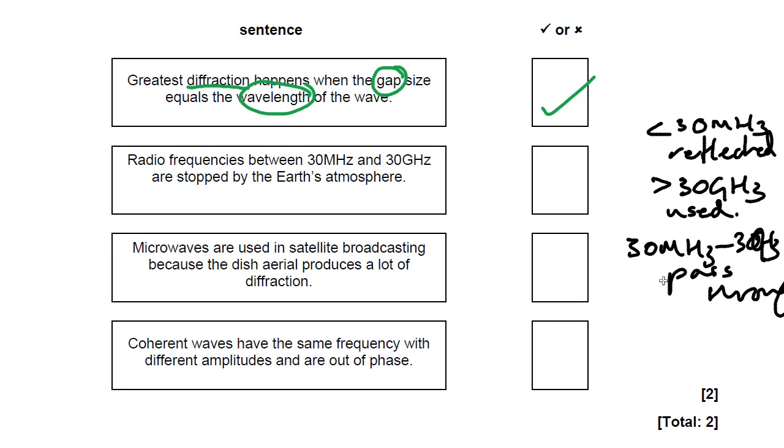So this says radio frequencies between 30 MHz and 30 GHz are stopped by the Earth's atmosphere. No, that's false. They can pass through.